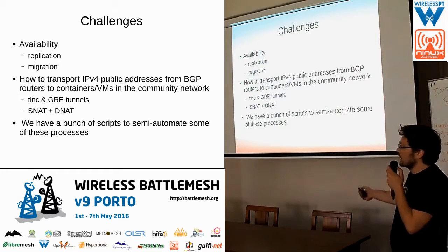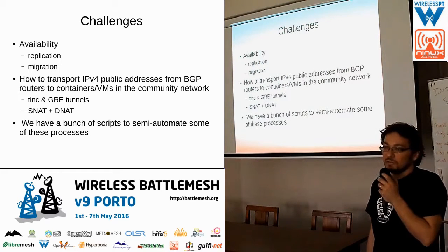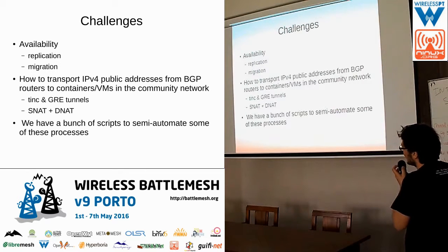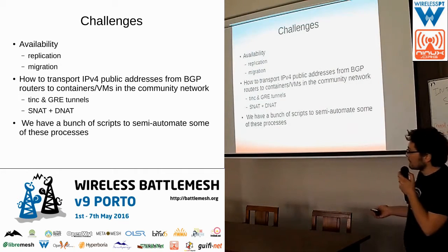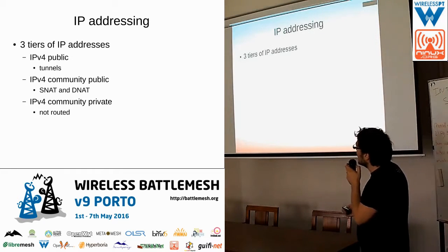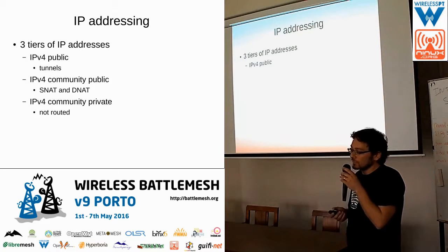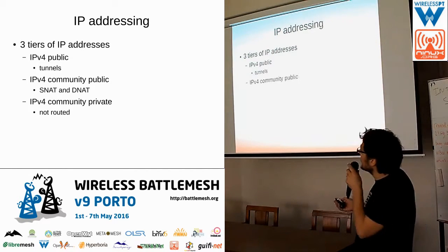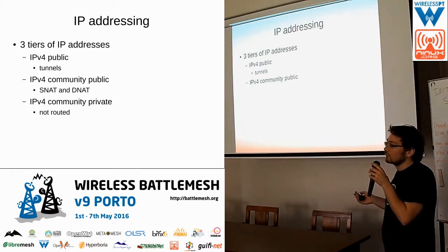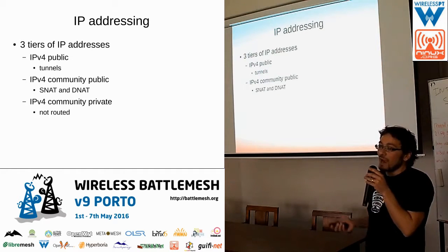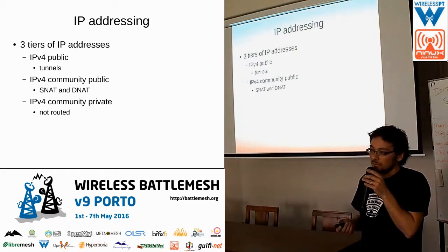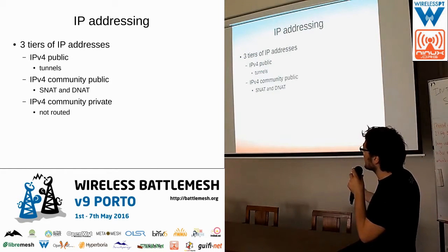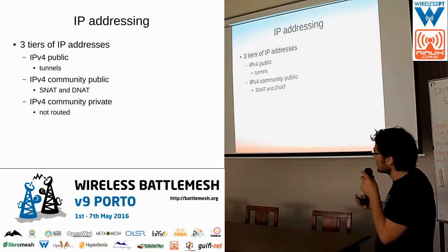It's really just a bunch of scripts with no real documentation — a crappy thing that we hope to publish someday in a nice way, but it's really work in progress, which is why this is a lightning talk. Looking at what we're using: we have three types of IP addresses. We have IPv4 public addresses transported over the network via GRE tunnels. We have IPv4 community public addresses — private IP addresses that are routable inside the community network but appear private from the internet. I think this terminology was born in Guifi. And we also have community private addresses, which are not routed at all.